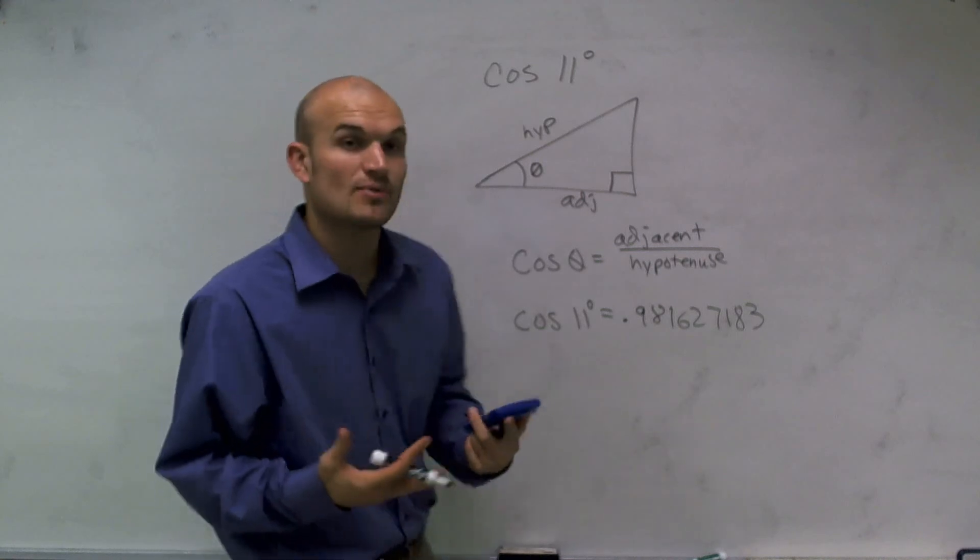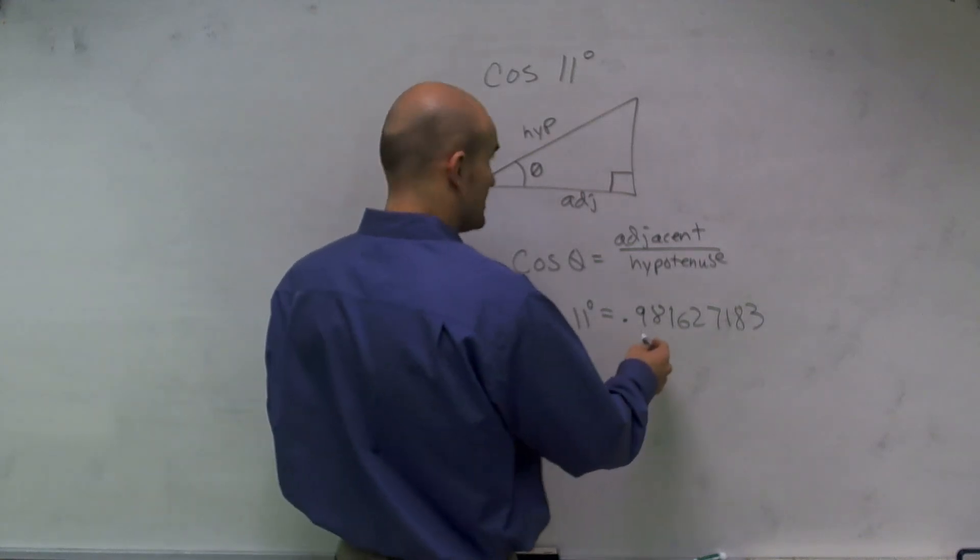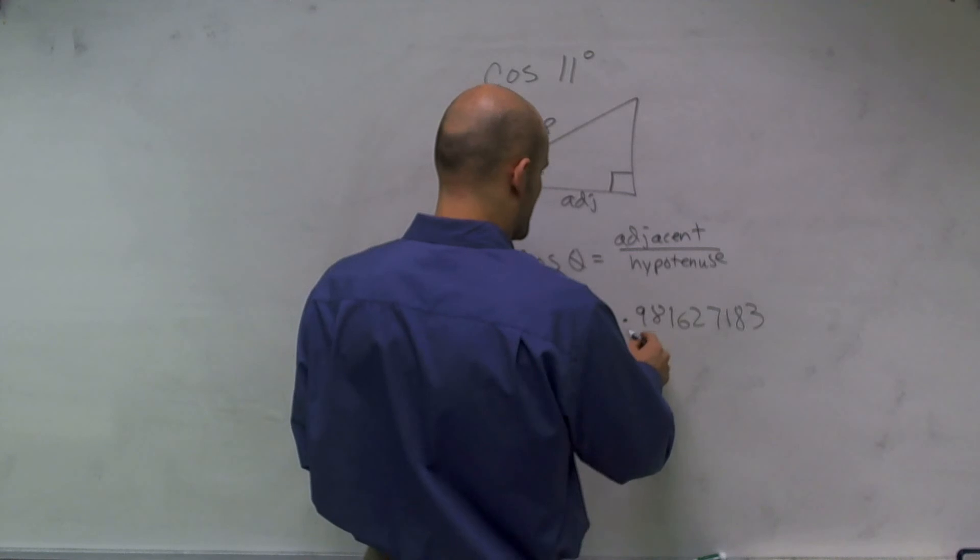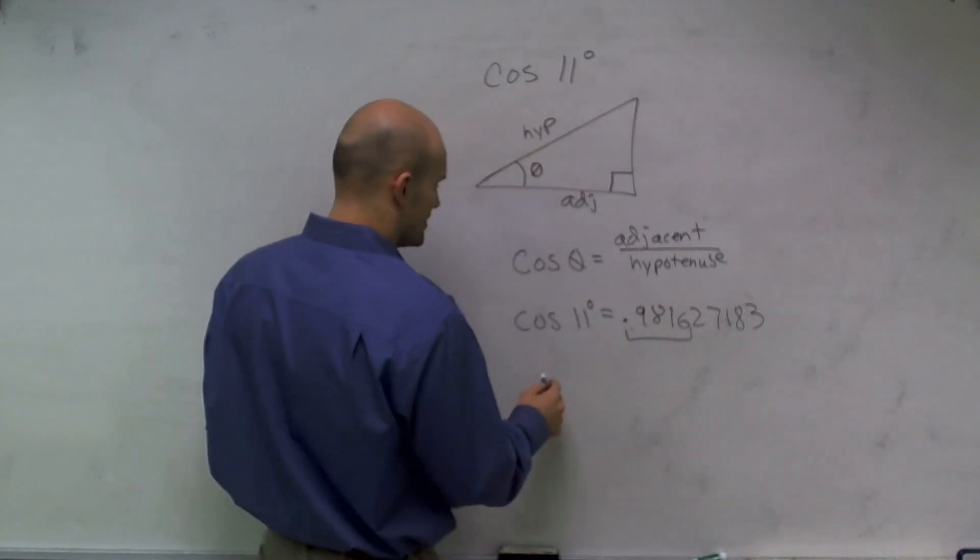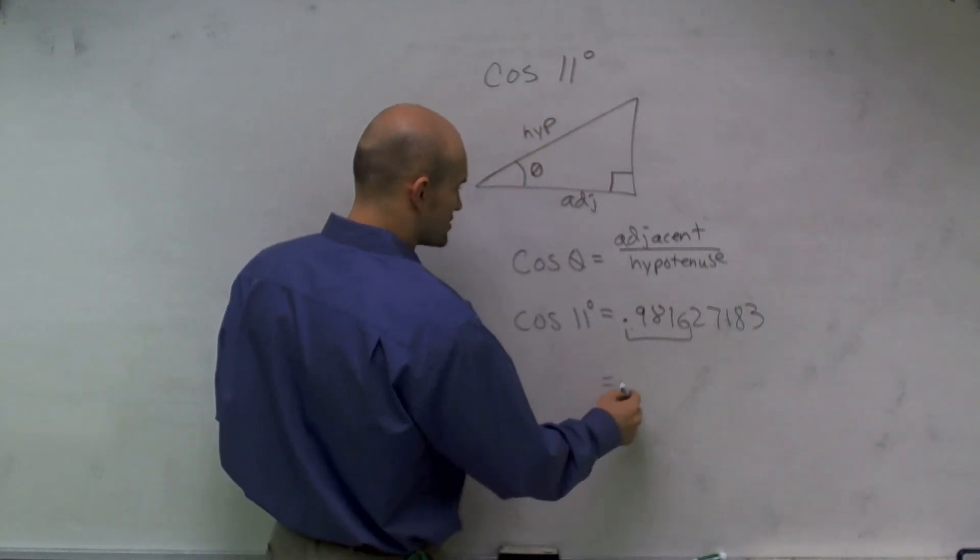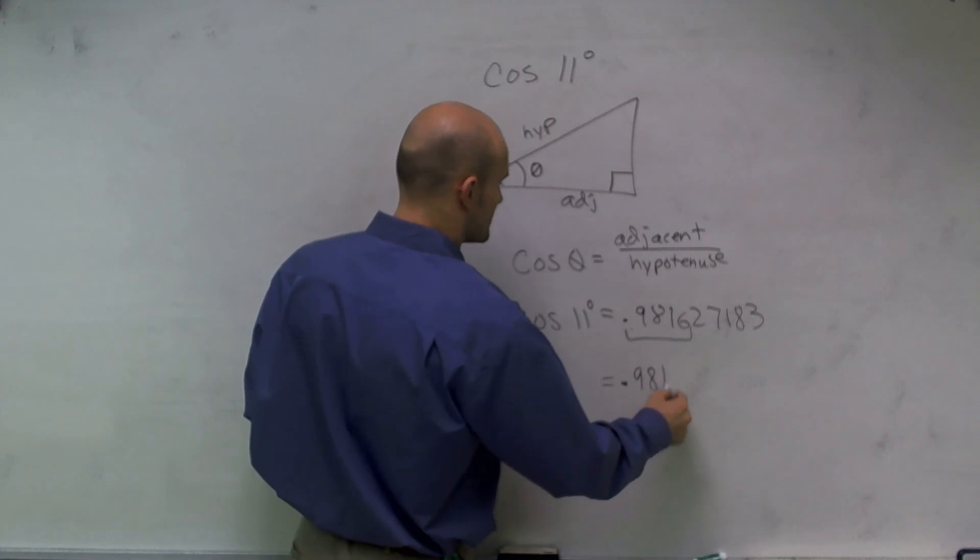But it says it wants to round it to the nearest thousandth. So I'm going to go ahead and take it to my nearest thousandth place. And therefore, my final answer is just going to be 0.9816.